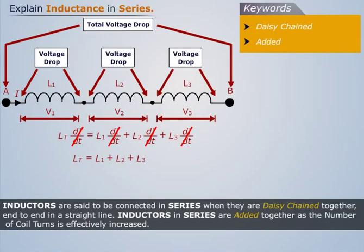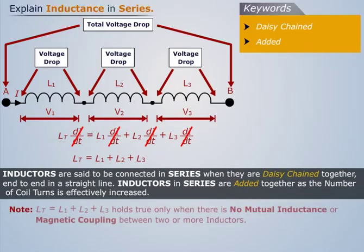Thus inductors are said to be connected in series when they are daisy-chained together, end-to-end in a straight line. Inductors in series are added together as the number of coil turns is effectively increased. Note that this equation holds true only when there is no mutual inductance or magnetic coupling between two or more inductors.